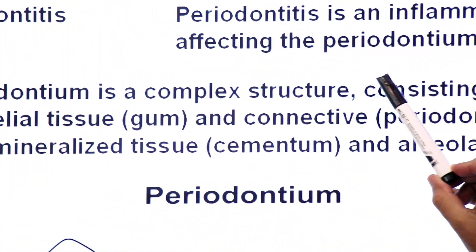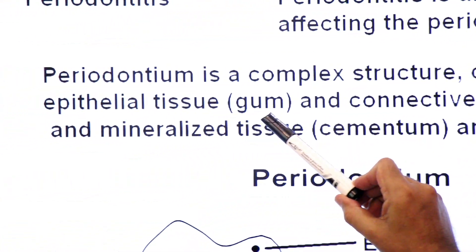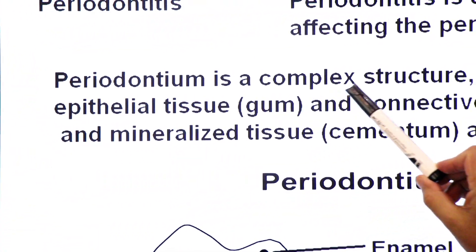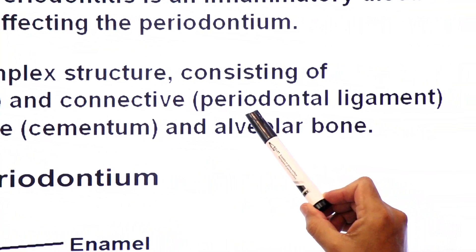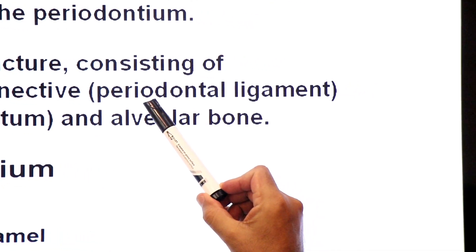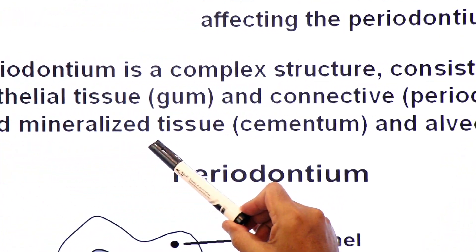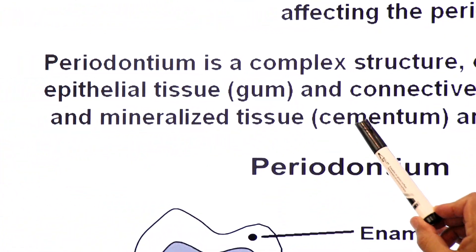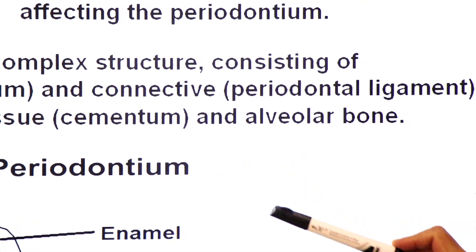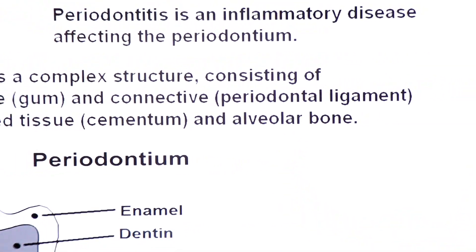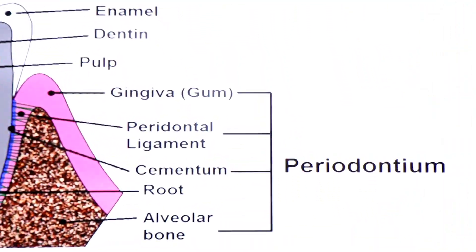The periodontium is a complex structure consisting of epithelial tissue known as the gum, connective tissue called the periodontal ligament, and mineralized tissues including cementum and alveolar bone. These four parts together are called the periodontium.